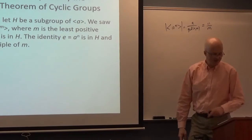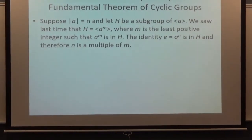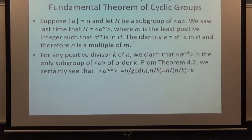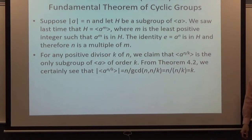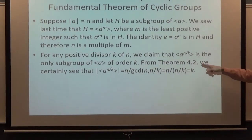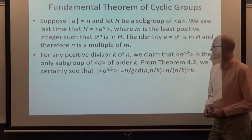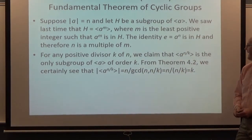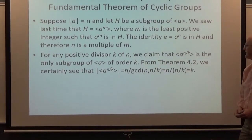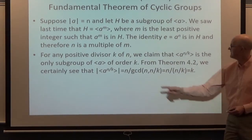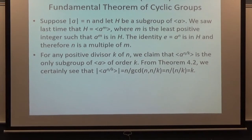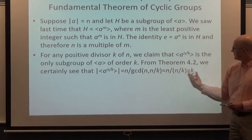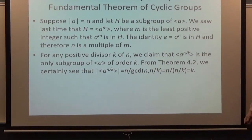What else do we need to prove? Looking at the fundamental theorem of cyclic groups on page 81, we need to show that for each divisor of n, there's exactly one subgroup of that order. The cyclic subgroup generated by a^(n/k) for a divisor k of n will have order k, using theorem 4.2: the order is n divided by GCD(n, n/k). Since n/k is smaller than n and divides n, the GCD simplifies, giving a cyclic subgroup of order k.